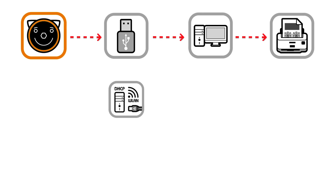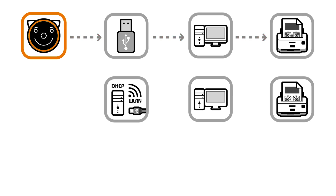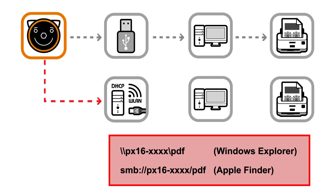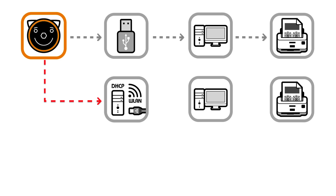Secondly, the PlusOptics S16 can be connected to a network router via the LAN or wireless LAN interface. Simply enter the displayed network path into the address bar of your Windows Explorer or Apple Finder. Measurement reports saved on the USB stick are displayed after confirmation of your entry and can then be printed manually on a printer connected to your workplace computer.